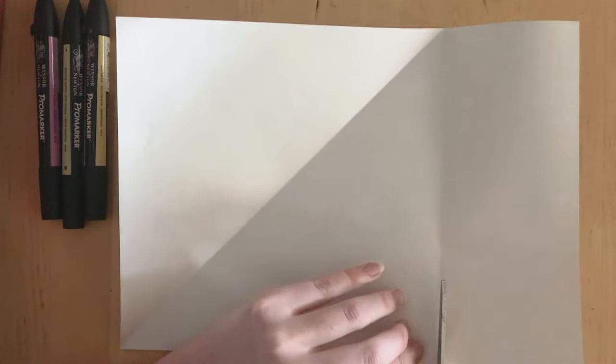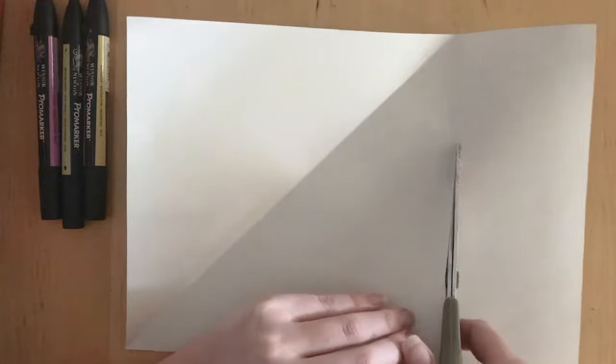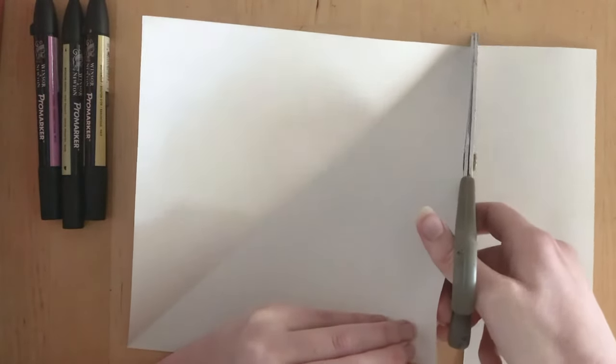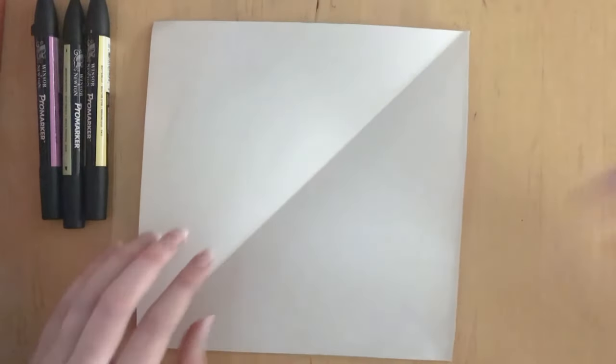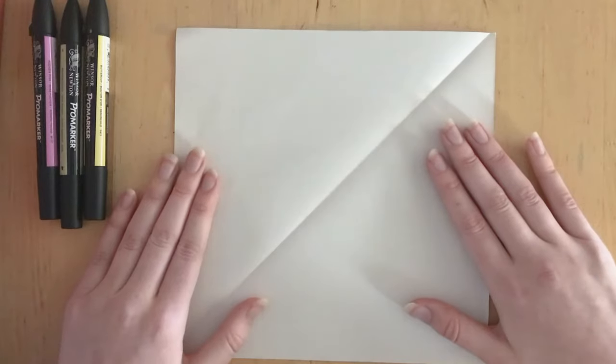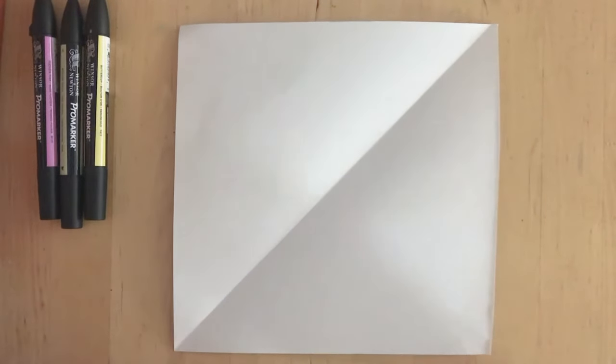We're going to cut off this loose bit here. There we go, perfect square. Now for my one, I'm going to color it in.